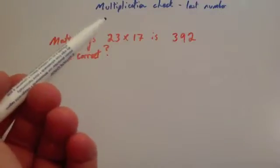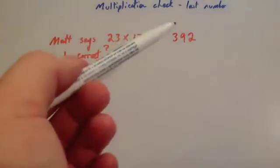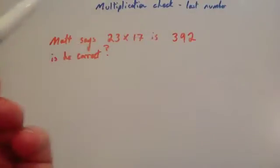In this video we're going to look at how to check your multiplications using a quick check by looking at the last digit of the last number.